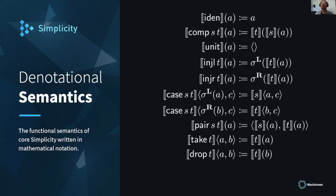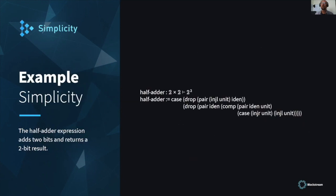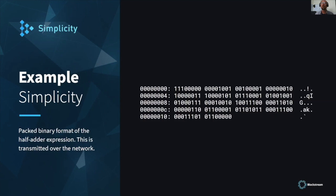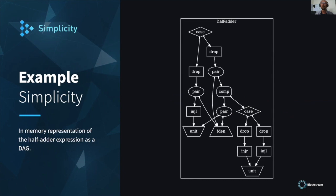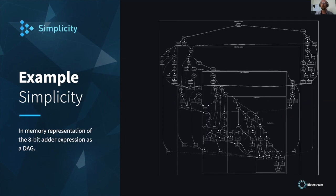It's formally defined at this low level, but there's not even a half adder built in. Here is a half adder implemented in the list-plug syntax, just adding up two bits. Here's the binary for the half adder. And this is the directed acyclic graph of the half adder, which shows that there is reuse as well. There's no looping, but there is reuse.